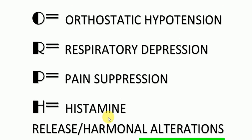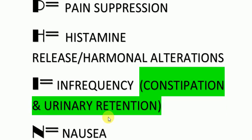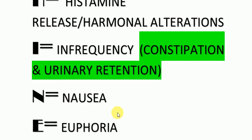P for pain suppression — it suppresses pain, which is its analgesic effect. H for histamine release, which causes pruritus, tachycardia, etc., and also causes hormonal alterations. I for infrequency, which includes constipation and urinary retention.